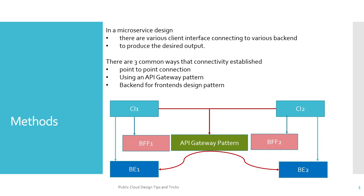There are typically three common ways to establish connectivity between a client application and backend services. The first one is a direct point-to-point connection. In the example, there are two client interfaces — CL1 and CL2 — connecting to backend one and backend two respectively. So the first approach is a direct connectivity point-to-point connection.